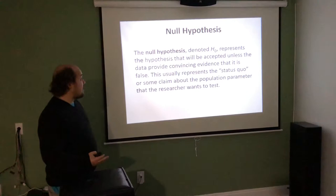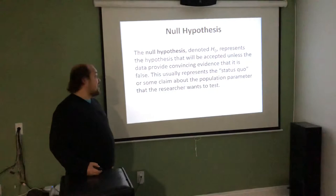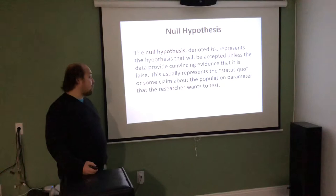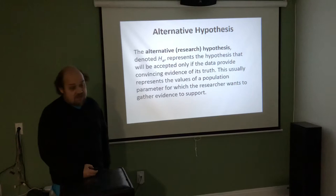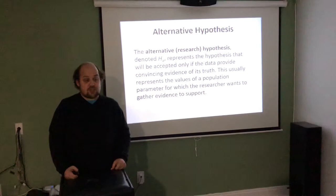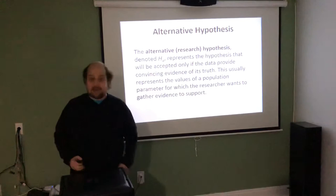How we compare them is based on how we set up the problem, which is always using a null hypothesis and an alternative hypothesis. The null hypothesis, denoted H₀, represents the hypothesis that will be accepted unless the data provide convincing evidence that it's false. It usually represents the status quo or some claim about the population parameter that the researcher wants to gather evidence to support.